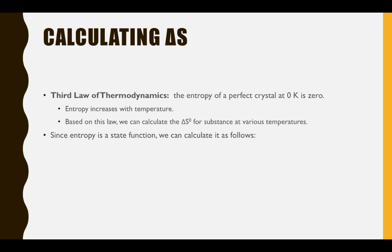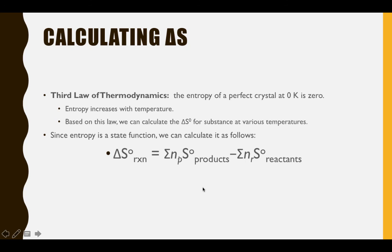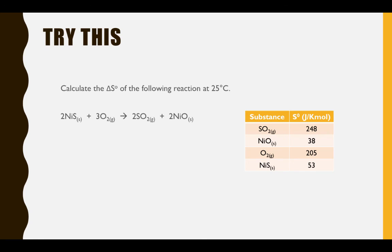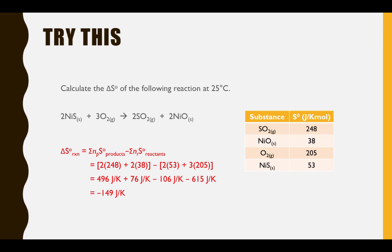Just as we saw with delta H, we can calculate delta S by subtracting the total entropy of reactants from the total entropy of products. These entropy values are published in tables and will always be given to you. In the example shown, the negative delta S indicates a decrease in entropy, which could have been predicted from the balanced equation — we had 3 moles of gaseous reactant but only 2 moles of gaseous product, therefore a decrease in entropy.